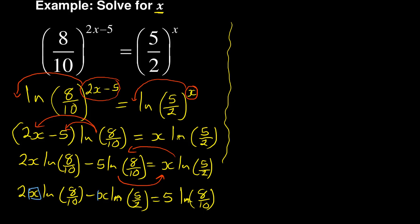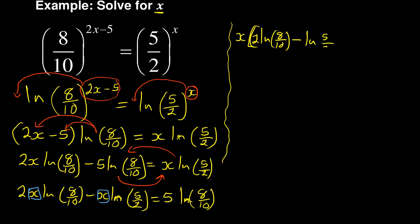Now I can factorize x. Factorizing gives: x times [2·ln(8/10) minus ln(5/2)] equals 5·ln(8/10). Remember I'm working with ln, not log, but you can use log — it's the same.